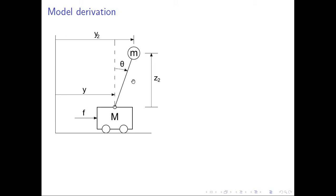Since the cart cannot move vertically, we can take any reference point. For simplicity, we set the pivot point as our zero vertical distance. We symbolize the vertical position of the pendulum as C2. The horizontal position of the pendulum is composed of the horizontal position of the cart plus the displacement given by the angle and the length of the rod, L.